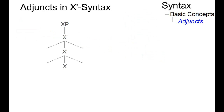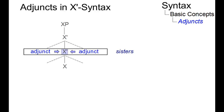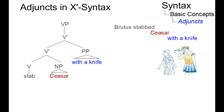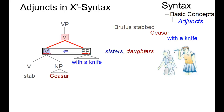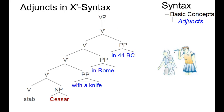In X-bar syntax, the phrase structure representation format in generative grammar, adjuncts are defined structurally as sisters of X-bar and as daughters of another X-bar. So in 'Brutus stabbed Caesar with a knife', the prepositional phrase 'with a knife' is an adjunct — it is a sister to verb-bar and a daughter to another verb-bar. Since adding an adjunct may recursively expand X-bar into another X-bar, the number of adjuncts is theoretically unlimited.